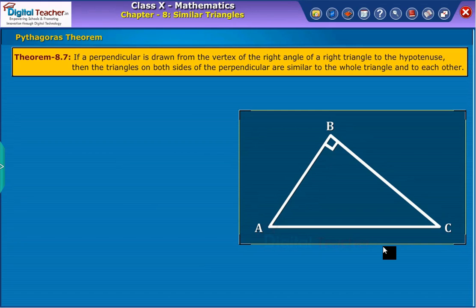For this, we make use of the following result. If a perpendicular is drawn from the vertex of the right angle of a right triangle to the hypotenuse, then the triangles on both sides of the perpendicular are similar to the whole triangle and to each other.